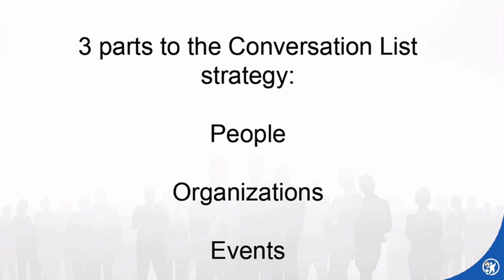There are three parts of the conversation list strategy: it's not just about people, but also about organizations and events, because that will affect the flow of new clients into your firm. I usually suggest eight to ten organizations that you'd like to deepen your involvement with, and another list of eight to ten events — conferences, quarterly events, or something like that. You're putting together these lists as a kind of brainstorm roadmap of the people, organizations, and events that are going to lead to referrals and clients coming into your firm.